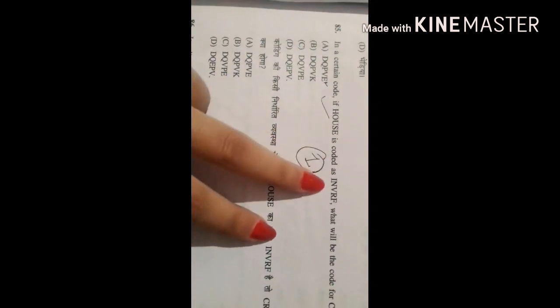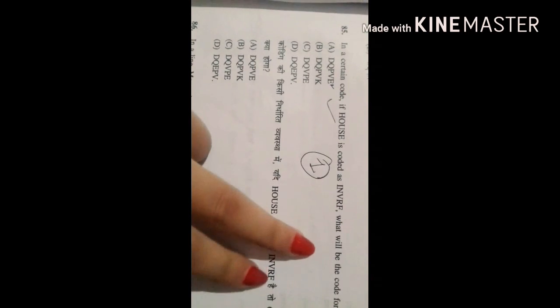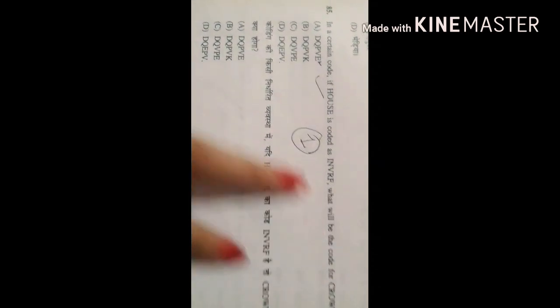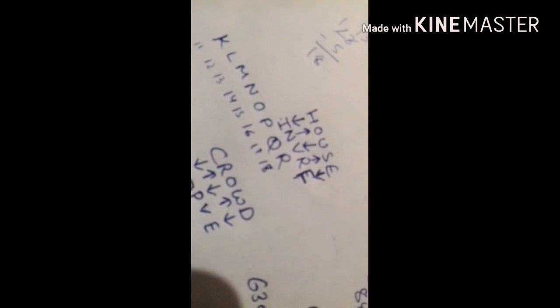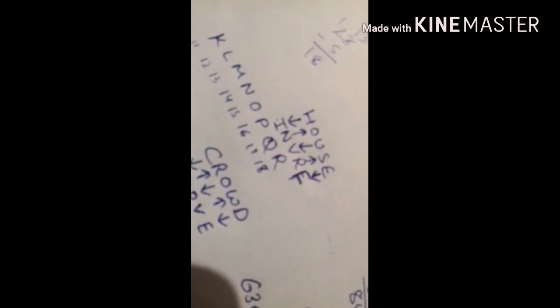So the 85th question is we have to find a certain code. If house is coded as IVFRE then what will be the code for crowd? So the correct answer is A because of a sequence. Let me show you the sequence. So I guess this was the sequence of inversion. This is how it is made.